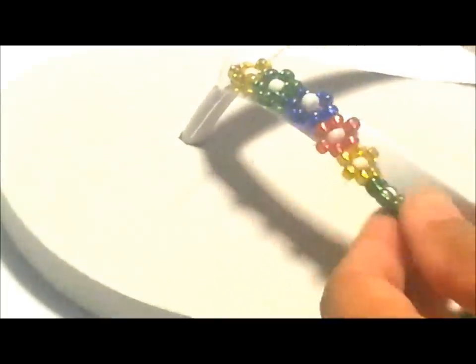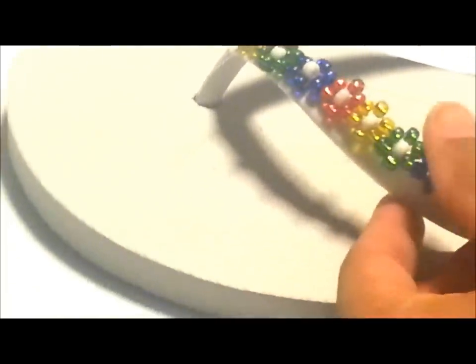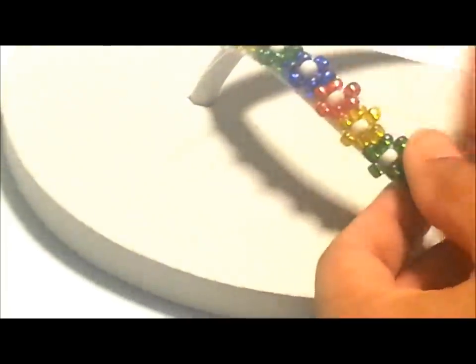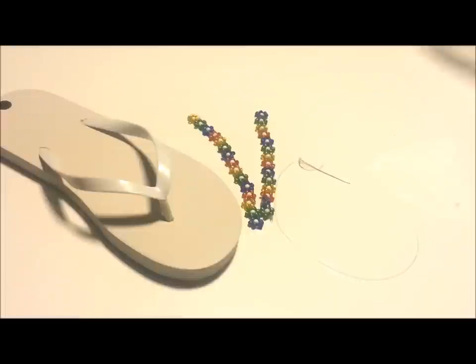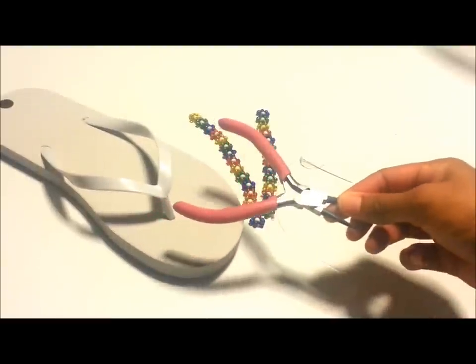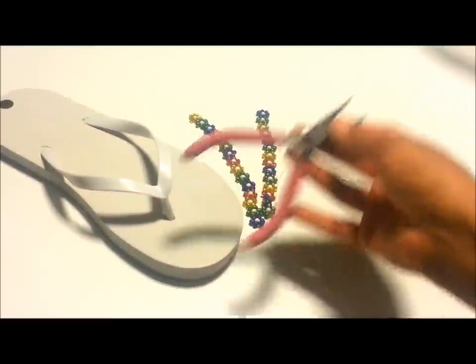So all you need for this tutorial are the daisy pattern beads, a needle and thread. The type of thread I'm using is called beading thread and you can find it in the jewelry section of any craft store, or you can use fishing line as it's about the same consistency. You also need flip-flops and a pair of pliers.